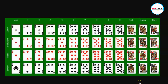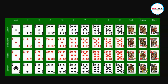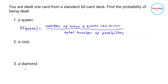The total number of queens in a standard 52 card deck is equal to four — one queen for clubs, one for diamonds, one for hearts, and one for spades. The total possibilities are 52. Therefore, the probability of being dealt a queen is equal to 4 over 52, which simplifies to 1 over 13.